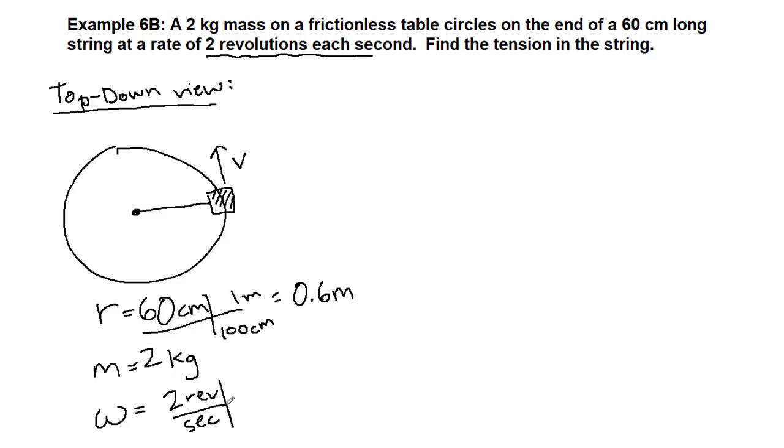Two revolutions per second. We have seen omega in radians per second like it's supposed to be. We've also seen it in revolutions per minute (rpm). This happens to be revolutions per second, so the only unit we need to change is revolutions to radians. We get 4π radians per second, which is 12.6 radians per second.